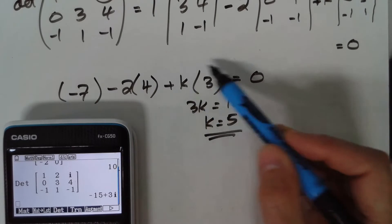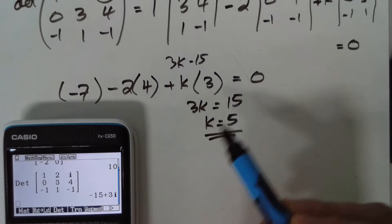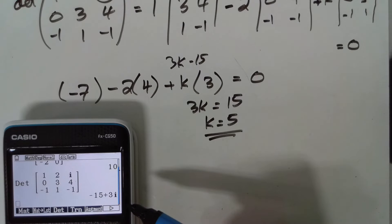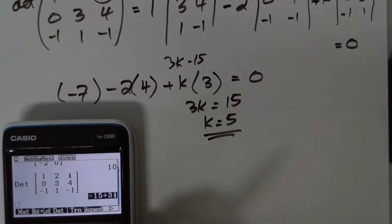And you get that this little formula here, which we've got here, is 3k minus 15, didn't we? And that's what we've got here, 3i minus 15. And that equals 0, a little way of checking it.